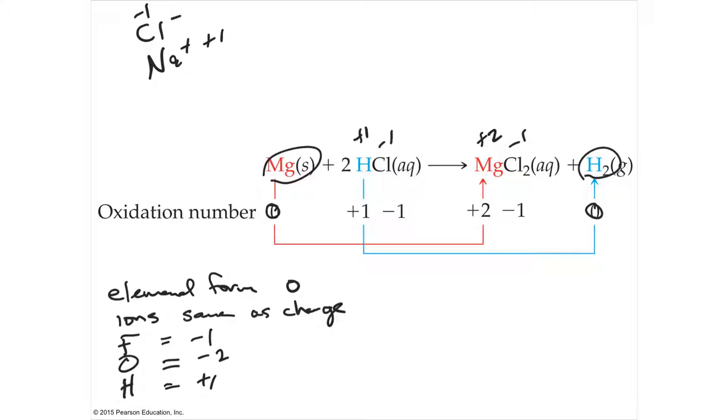So what went up? This went from zero to positive two. So magnesium went up. It was oxidized. The hydrogen went down from positive one to zero, so the hydrogen was reduced. So what happened? The hydrogen stole an electron from the magnesium.